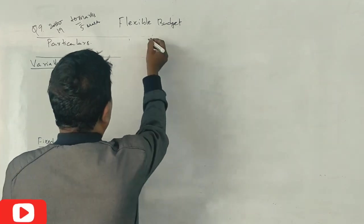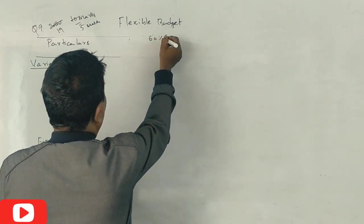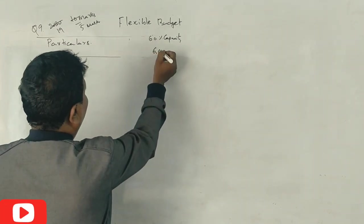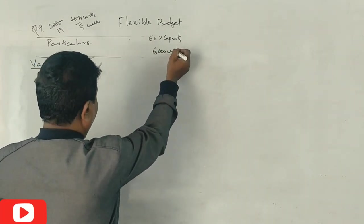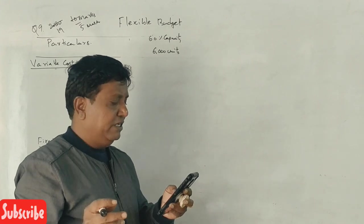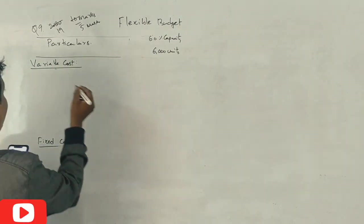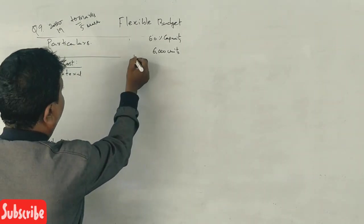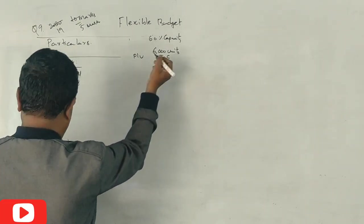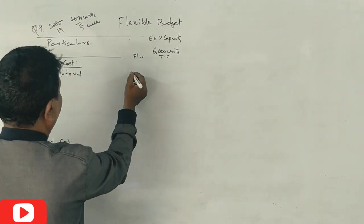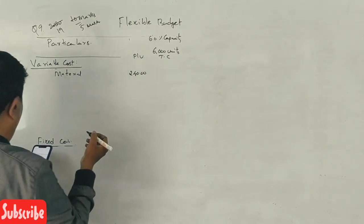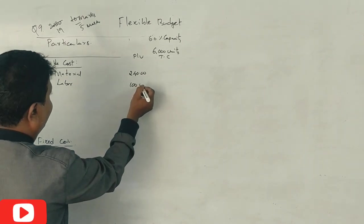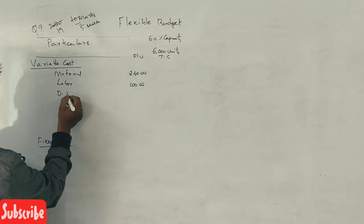60 percent capacity gives 6,000 units of manufacturing. Material cost is 240 rupees per unit, labor is 100 rupees per unit, direct expenses variable 30 rupees per unit.